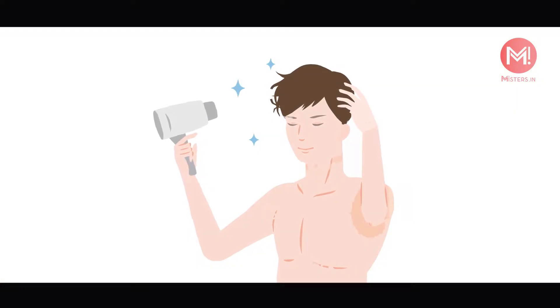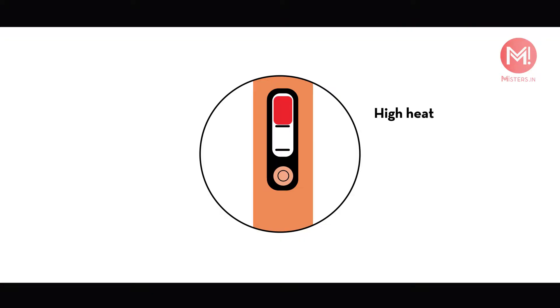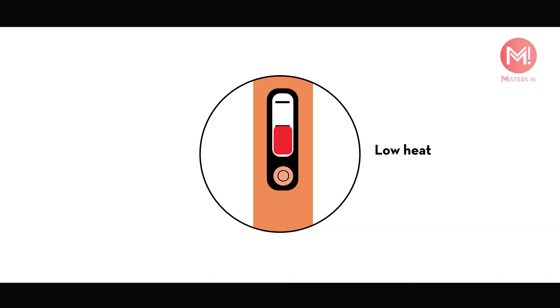Guys, you all have used a hair dryer and we all know that the style of hair is very attractive. Hair dryers available in the market come in two modes: a heat mode and a cold air mode. There are also three levels of heat — low, medium, and high.